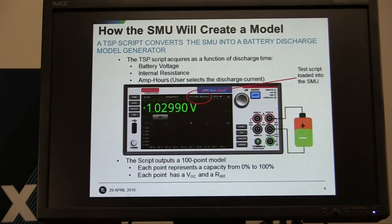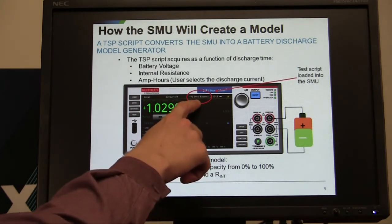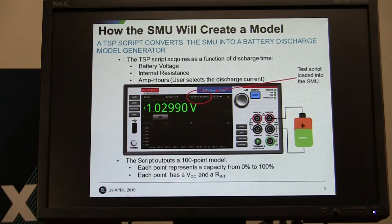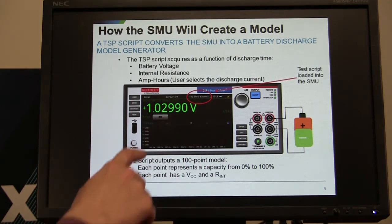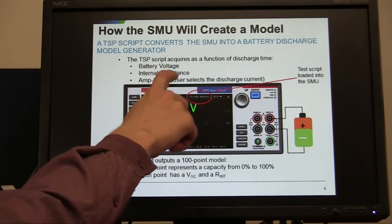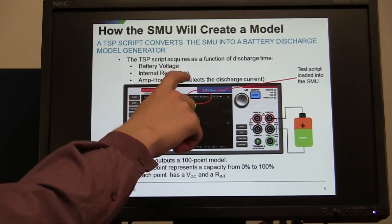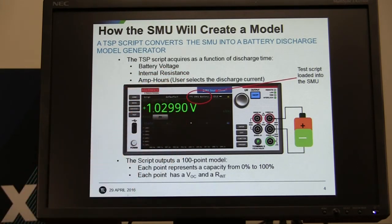So how is the SMU going to create this model? Essentially you're going to load a TSP script from the front panel and that TSP script will run and collect battery voltage, open circuit voltage, internal resistance, and amp hour capacity data from the battery.